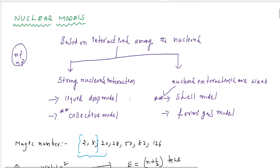Hello. Today we are going to discuss nuclear models. By using these nuclear models we can study the properties of the nucleus. The nucleus consists of protons and neutrons. Based on the interaction among the nucleons, nuclear interactions are of two types: one is a strong interaction and another one is a weak interaction.